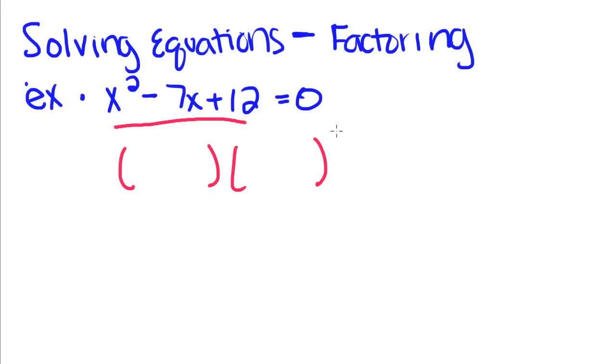For this particular one, it's a trinomial. So we're going to have to factor it out and there will be two quantities that will multiply to give us this. This will be an x and this will be an x. Now we ask ourselves what two numbers will multiply to get positive 12 and add to get negative 7.